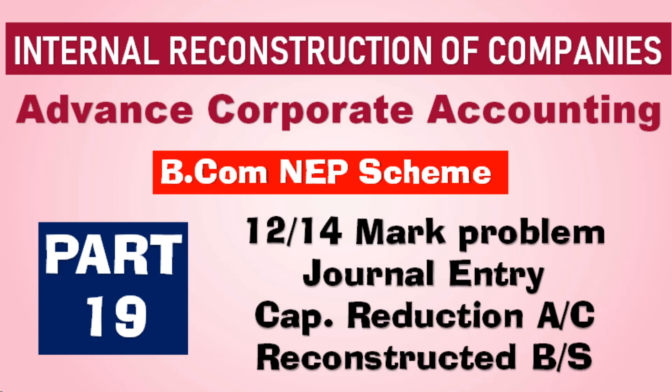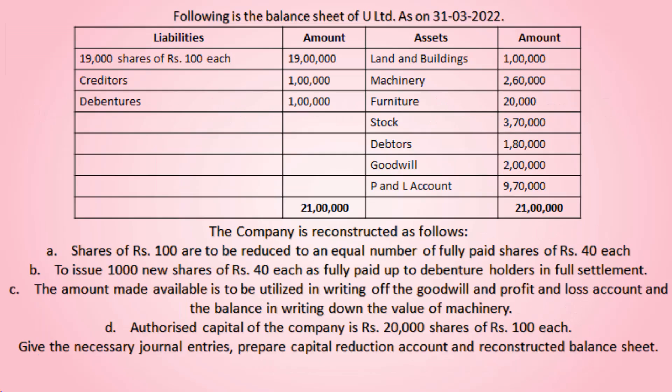The question is on the screen — please take a screenshot of the question or keep it handy while I am explaining the problem, so that you can understand it in a better way. Following is the balance sheet of U Limited Company as on 31st March 2022. In the balance sheet, liabilities and assets are given as usual. Now please concentrate on the additional information — the company is reconstructed as follows.